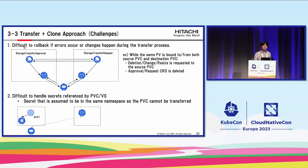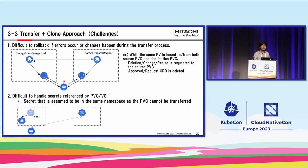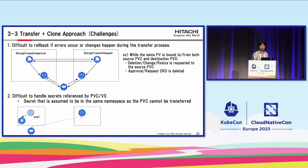There are two big challenges with the rebinding approach. The first challenge is that it is difficult to roll back if errors occur or changes happen during the transfer process — five resources are involved, and changing bidirectional binding is not an atomic operation, so it is difficult to keep the status of all resources consistent. The second challenge is that it is difficult to handle secrets referenced by PVC or VS. In some CSI drivers, secrets referenced from PVCs are used to process operations in the backend storage. A secret assumed to be in the same namespace cannot be transferred, so such a PVC may cause an issue due to the lack of secrets.